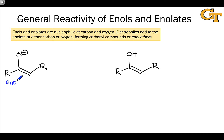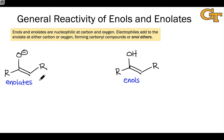Enolates are the conjugate bases of carbonyl compounds and are generated via deprotonation at the alpha position. Enols are isomers — more specifically tautomers — of carbonyl compounds in which an alpha hydrogen migrates to the carbonyl oxygen. A key difference between enolates and enols and the starting carbonyl compound is that we lack the C=O double bond and have a new C=C double bond between the carbonyl carbon and the alpha carbon in both cases.